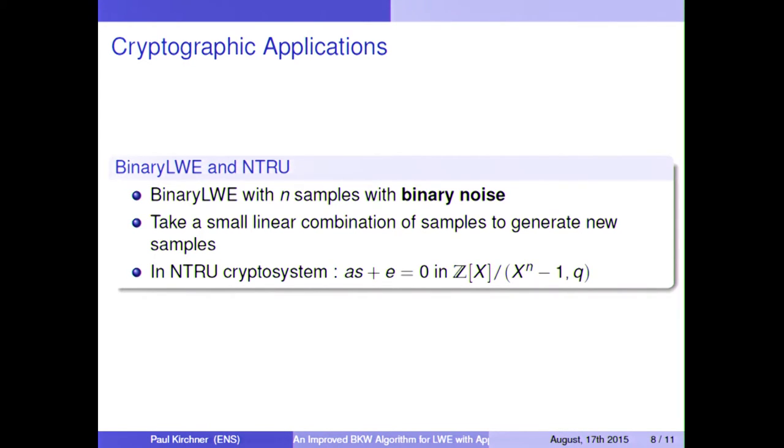Also for the N-TRU cryptosystem, if we want to recover the key, then we need to find s in this equation, in the ring Z[x]/(x^n - 1, q). And we can view this as being binary LWE with n samples and binary noise, because each time s and e are binary in this setting. We can view this as a vector matrix product with a structured matrix. And if we forget the structure, then it's exactly the problem that we described. So heuristically, it also works for N-TRU.